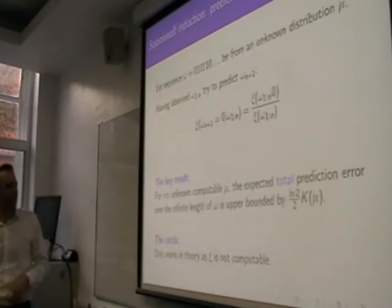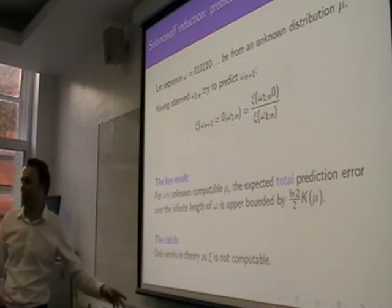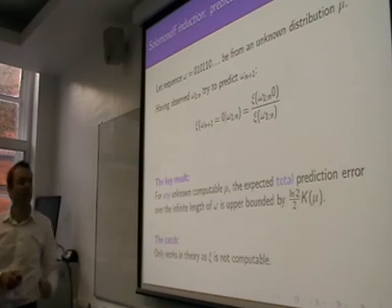So, K is not computable. And this is why we're ignoring compute time, but we have this optimal predictor.